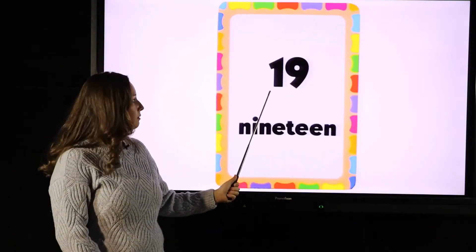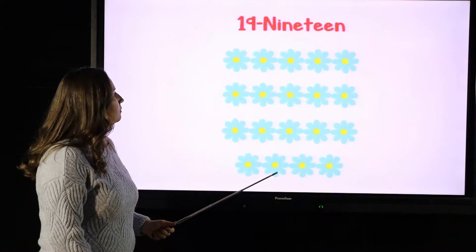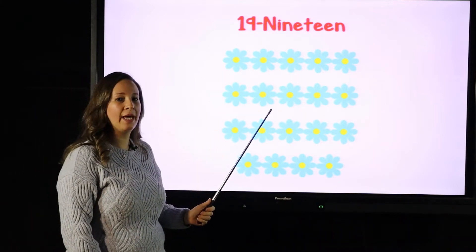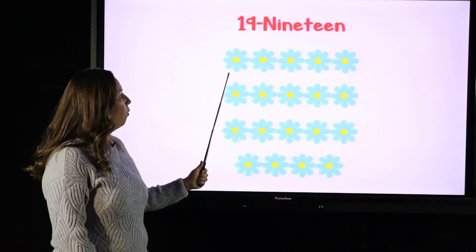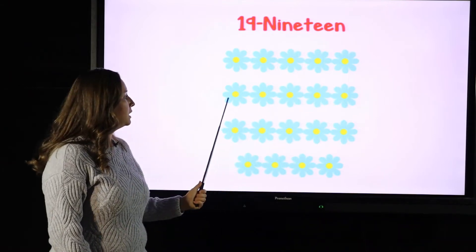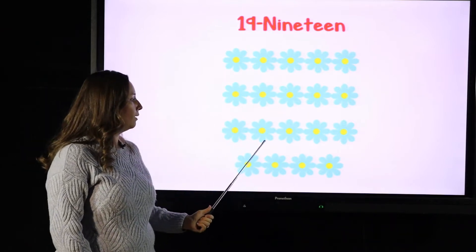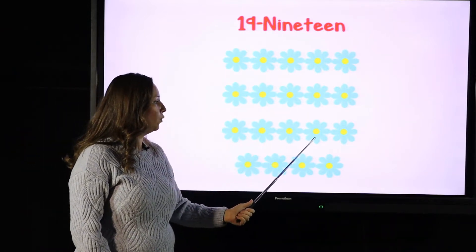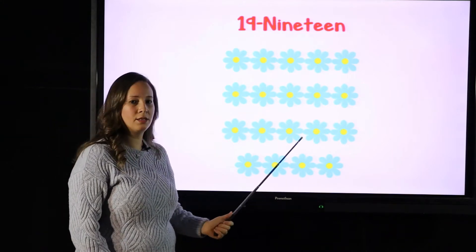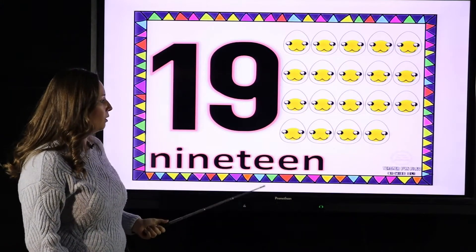Let's count how many flowers do we have here: one, two, three, four, five, six, seven, eight, nine, ten, eleven, twelve, thirteen, fourteen, fifteen, sixteen, seventeen, eighteen, nineteen. Okay, let's count how many X's do we have here.